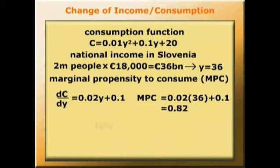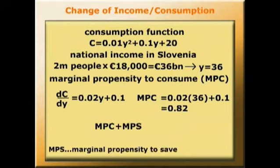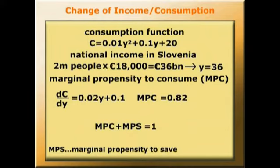Now, the marginal propensity to consume plus the marginal propensity to save must be 1. So if MPC equals 0.82, MPS must be 0.18.